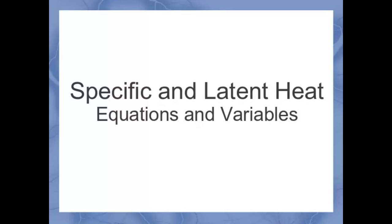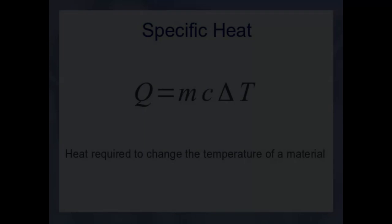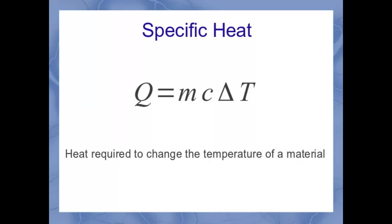Now we're going to talk about a couple of concepts in thermodynamics called specific heat and latent heat. We're going to take a look at the equations and the variables for those two concepts. Specific heat is defined by the equation Q equals mc delta T. This is the heat required to change the temperature of a material.